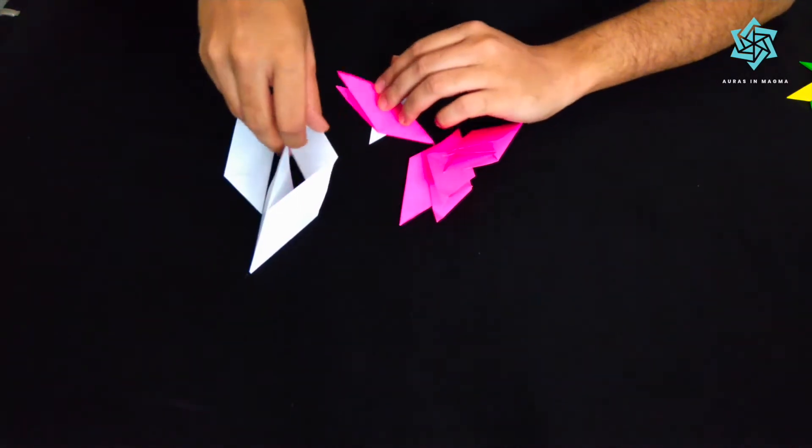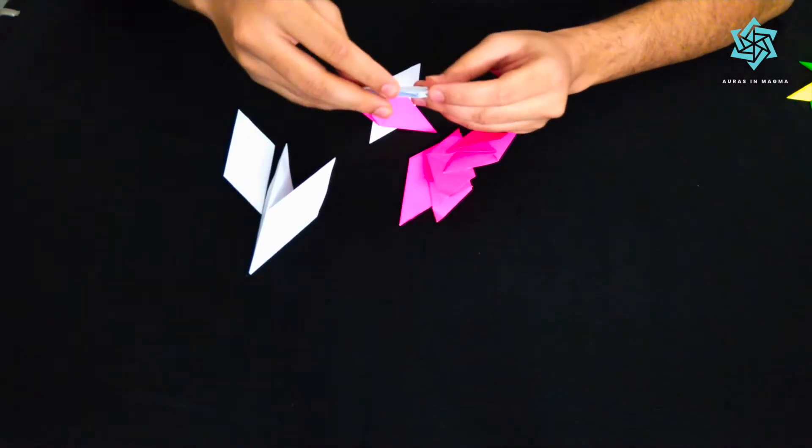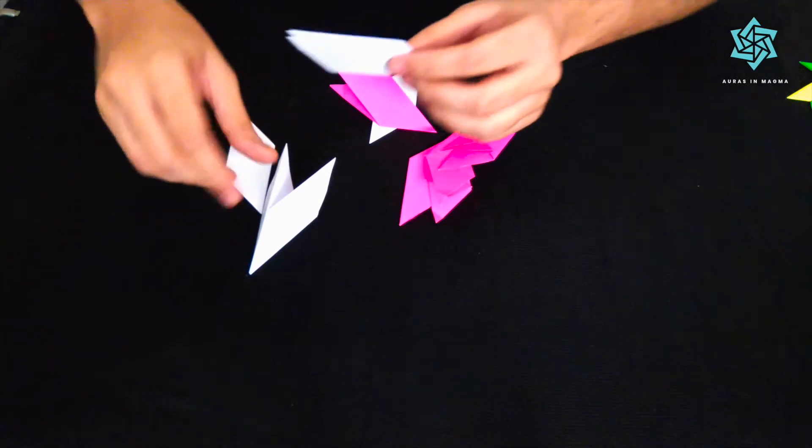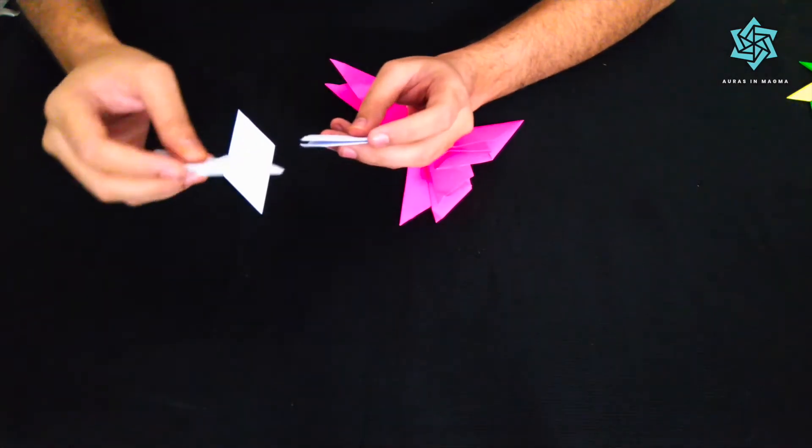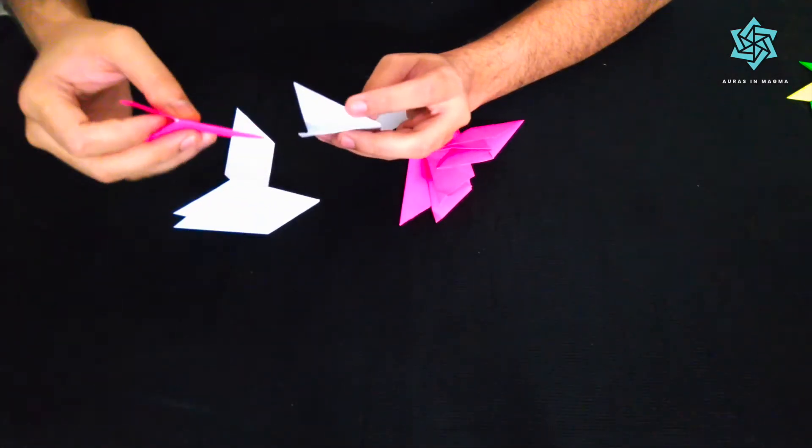So now the question comes how are we going to fix these? How are we going to make them sit into each other? So we take one of these pieces and then we alternate the colors.